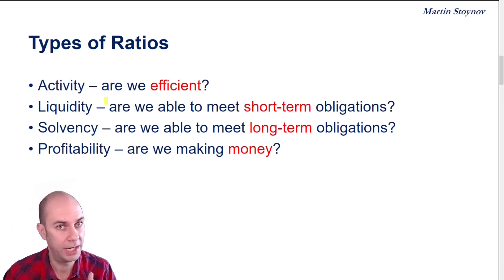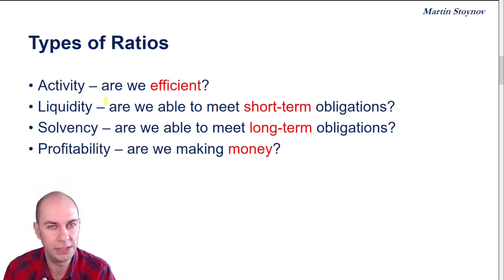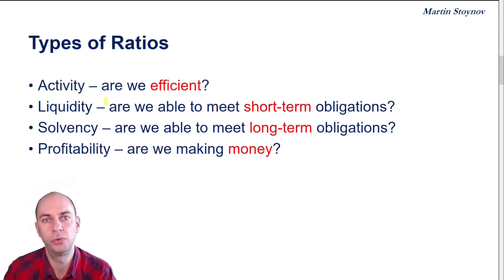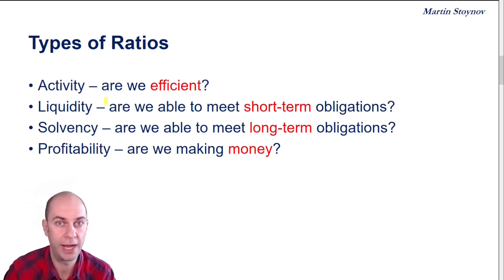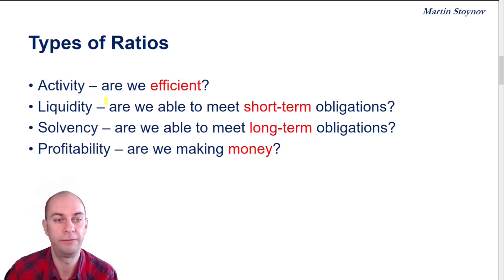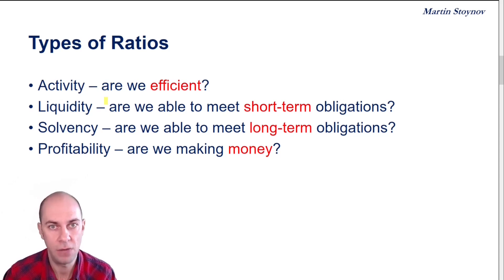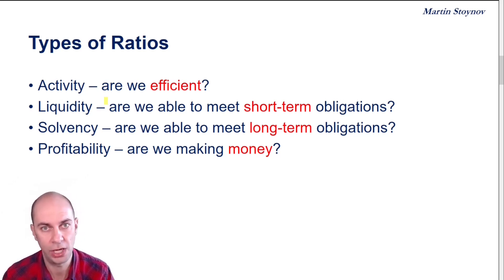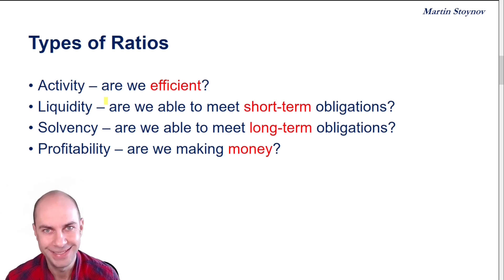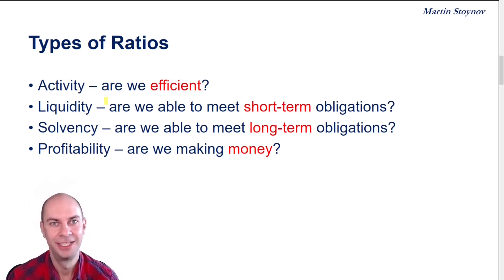Solvency — remember, liquidity looks at the short term, whereas solvency looks at the long term. When we say 'are you solvent?' we generally mean, are you able to survive in the long term? Do your asset values exceed your liability values? So if your long term lenders want to get paid, do you have enough assets to sell in order to satisfy your long term lenders and still live to tell the tale? That's solvency.